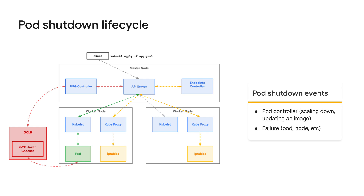Pods may shut down for a variety of reasons. Shutdown can be initiated by the pod's controller — scaling down, updating an image, or through failure such as pod or node failure. When the kubelet receives notification of the pod's termination, it starts the shutdown sequence. When the endpoint controller receives notification of pod termination, it removes the pod's IPs and endpoints from all services that match the pod. The network endpoint group controller leverages its own external Google Compute Engine health check to determine pod health.